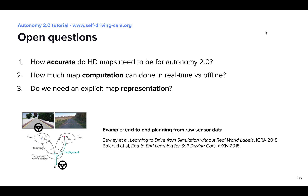And the last question is whether we need HD maps at all. For example, there are end-to-end approaches that learn to make planning decisions directly from raw sensor data without using an explicit map representation. This is very much an open question, like the other two, and answering them is very important for the future of maps within Autonomy 2.0. Thank you very much for your attention.